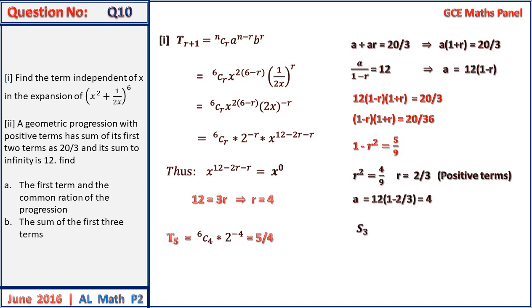Therefore the sum of the first three terms will be equal to a into 1 plus r plus r squared, which equals 38 on 9. We can equally use the formula.